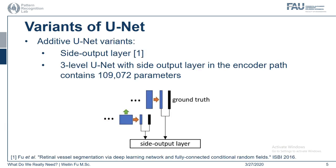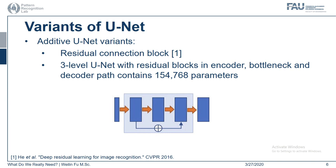On the basis of the vanilla UNET architecture, many variants are proposed. For instance, a side output layer could be added to the decoder path, providing the decoder with deep supervision. For a three-level UNET, this modification introduces around 1,000 parameters.